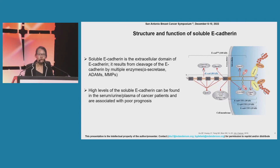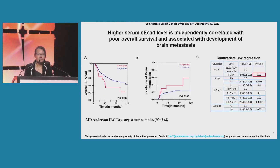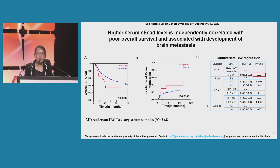We first wanted to know whether soluble e-cadherin expression level is associated with the malignancy of IBC patients. For this purpose, we analyzed serum from 348 IBC patients by ELISA. In our results, you can see clearly that high soluble e-cadherin IBC patients have worse overall survival and a higher incidence of developing brain metastasis compared with low serum patients. Moreover, our multivariable analysis shows that high serum soluble e-cadherin level is independently correlated with poor overall survival in IBC patients.